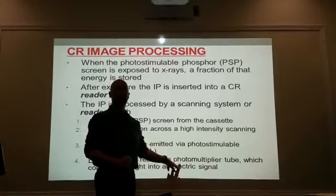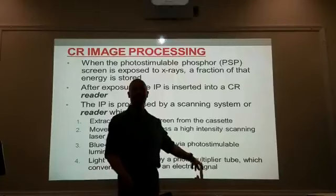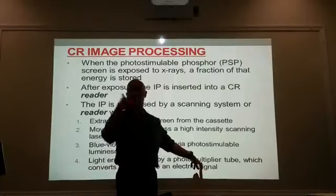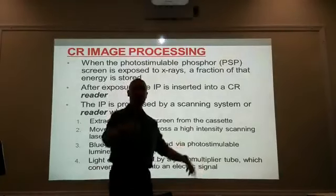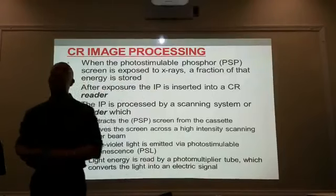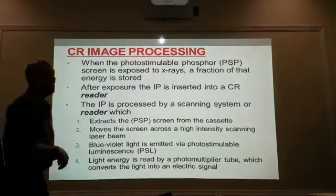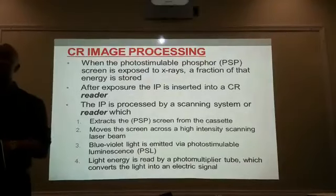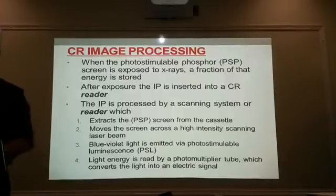This light, an analog signal, is now going to go to a photomultiplier tube — 'photo' meaning light, 'multiplier' meaning it amplifies. So it's going to take the light signal and amplify it. Then it's going to go to a converter which converts the light signal into an electrical signal for image display.